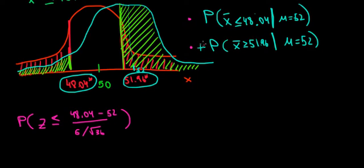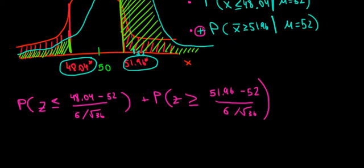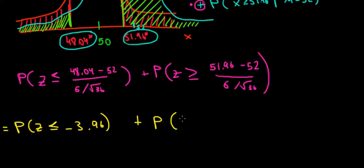At the same time, we also need the probability of z being greater than or equal to the standardized sample mean: 51.96 minus the population mean of 52, relative to the same standard error of 6 divided by the square root of 36. If we work out the math, we find we're looking for the probability of z being less than or equal to -3.96, plus the probability of z being greater than or equal to -0.04.